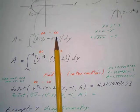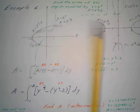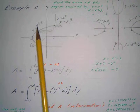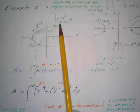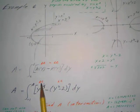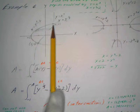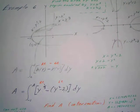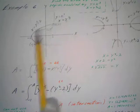We'll use the formula: integral of (right curve minus left curve) dy, with everything in terms of y. The left curve is x equals y squared minus 2. For the right curve, I solve y equals x cubed for x to get x equals y to the one-third. Taking the difference of those x values gives the length of each horizontal rectangle, and dy gives the width.